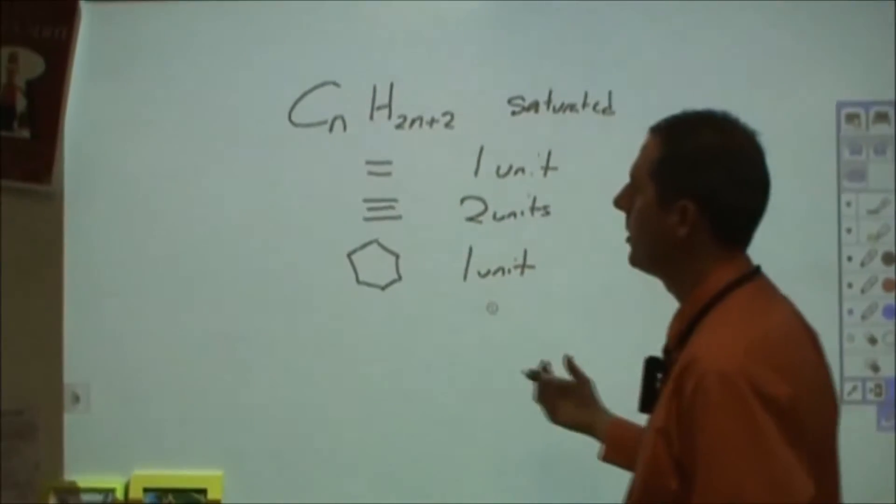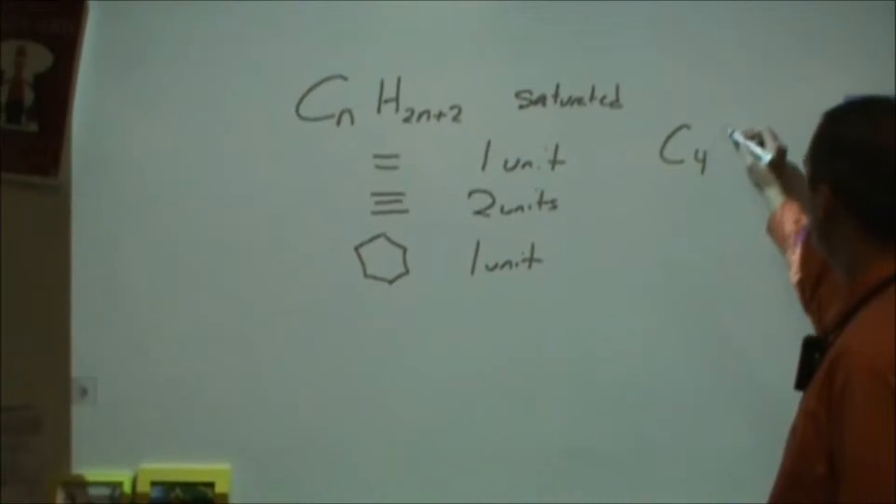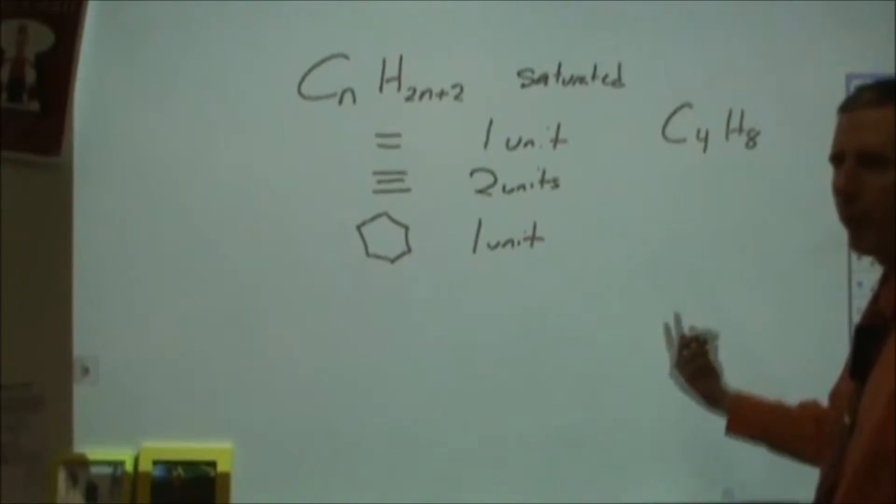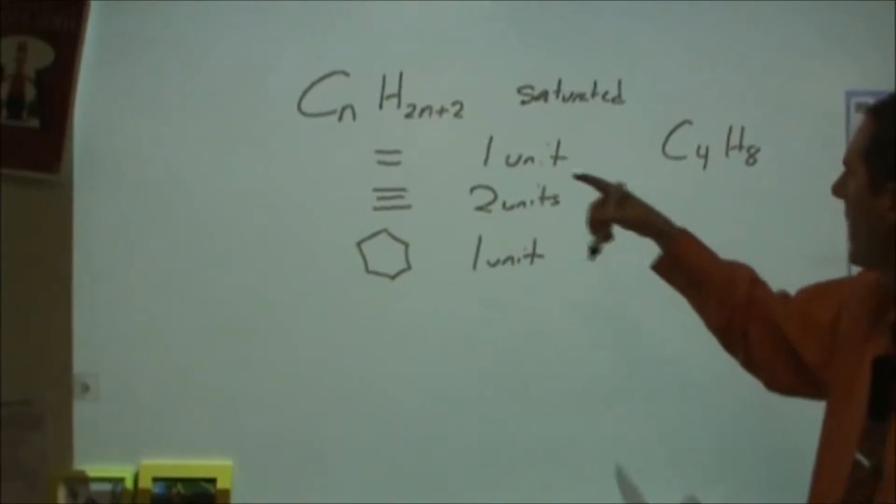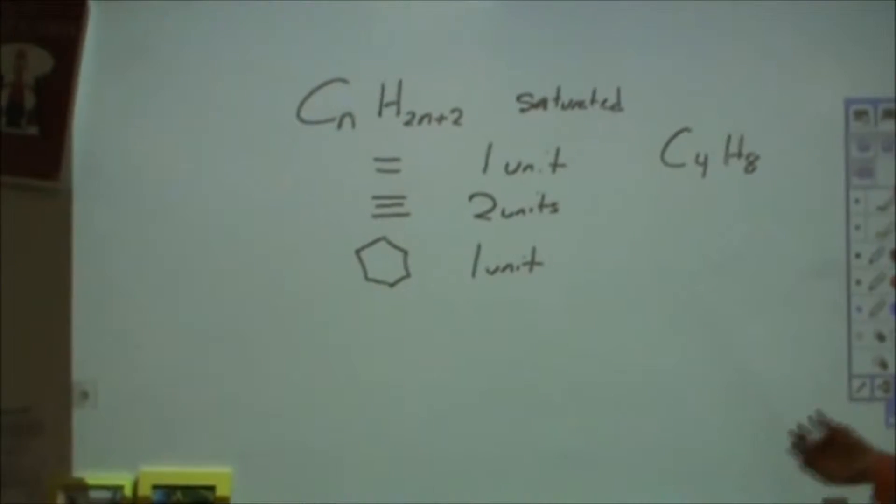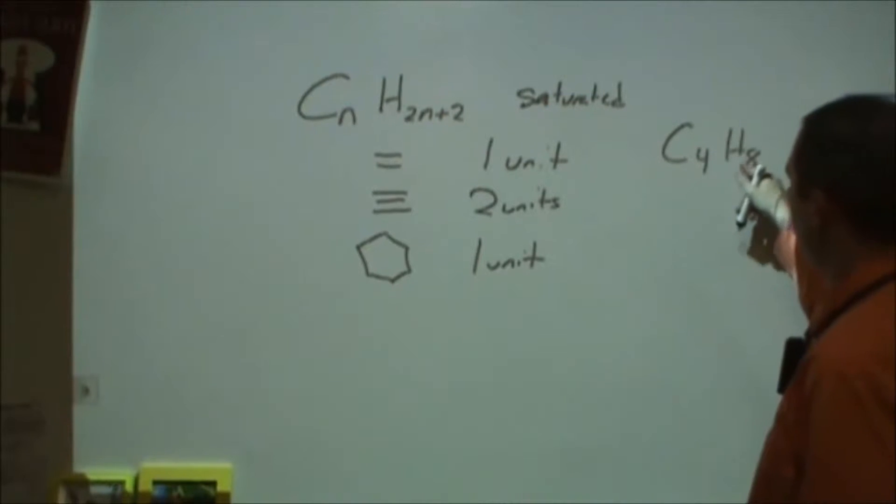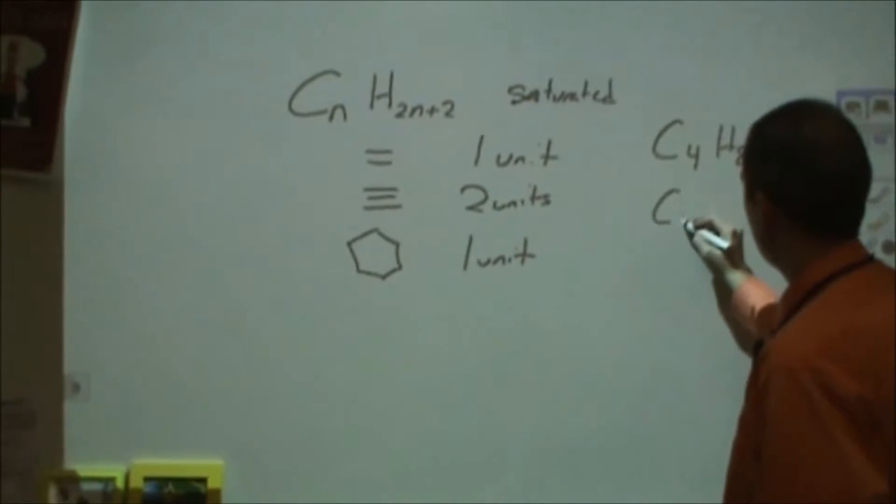Now, every time you remove two hydrogens, you create a unit of unsaturation. So if I have C4H8, then there will be one unit of unsaturation. So either I have cyclobutane or I have butene, but-1-ene or but-2-ene.